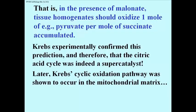At some point later, Krebs' cyclic oxidation pathway was shown to occur in the mitochondrial matrix. When he was doing his experiments, techniques of cell fractionation hadn't yet been developed, so it was simply a homogenate of tissues that was doing the reaction, and he didn't really know what part of the cell was doing it. Later we come to know, of course, that the Krebs cycle occurs in the mitochondrion.